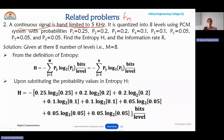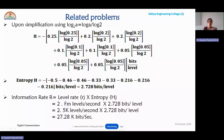First, calculate the entropy as per the respective probabilities, and you will get it as 2.728 bits per level. The information rate is the level rate small r multiplied by entropy. Since only the maximum frequency is given, use 2 × 5 kHz = 10 kHz. So 10 kHz × 2.728 = 27.28 kilobits per second.